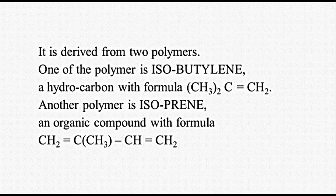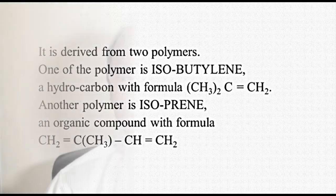Butyl rubber IIR is derived from two polymers. One polymer is isobutylene, a hydrocarbon with formula (CH₃)₂C=CH₂. Another polymer is isoprene, an organic compound with formula CH₂=C(CH₃)-CH=CH₂. The abbreviation IIR stands for isobutylene-isoprene rubber.